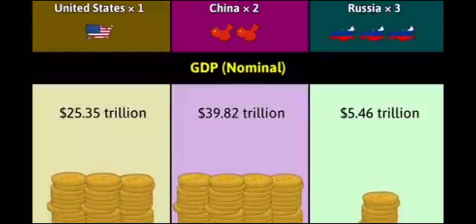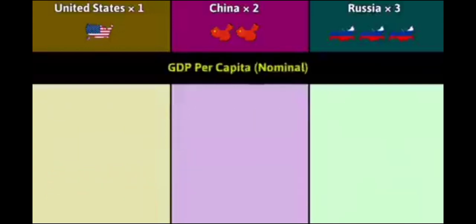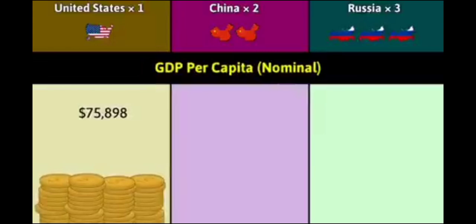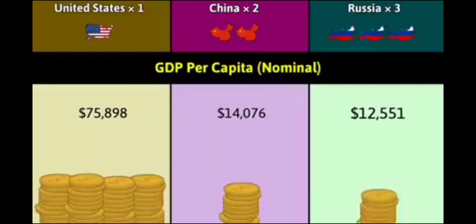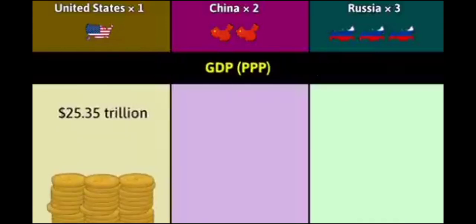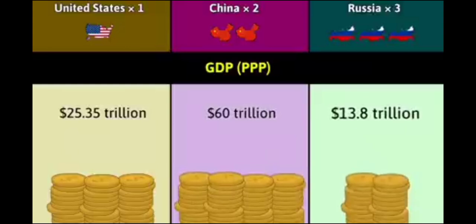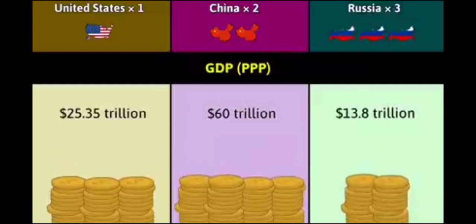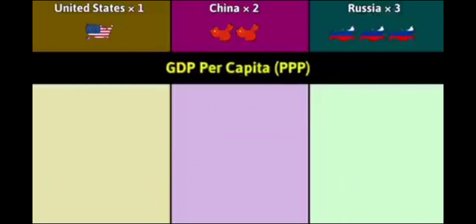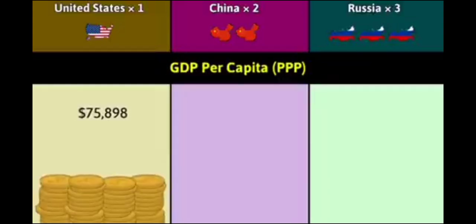GDP nominal: 25.35 trillion dollars, 39.82 trillion dollars, 5.46 trillion dollars. GDP per capita: 75,898 dollars, 14,076 dollars, 12,551 dollars. GDP by PPP: 25.35 trillion dollars, 60 trillion dollars, 13.8 trillion dollars. GDP per capita by PPP: 75,898 dollars, 21,291 dollars, 31,724 dollars.